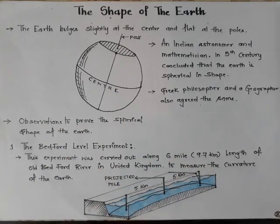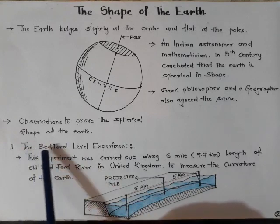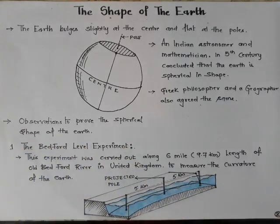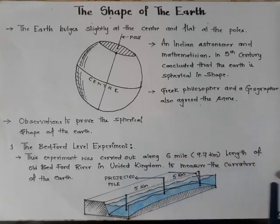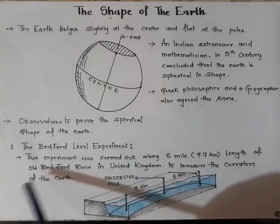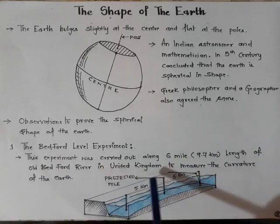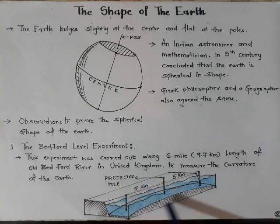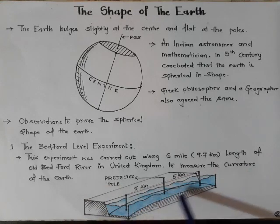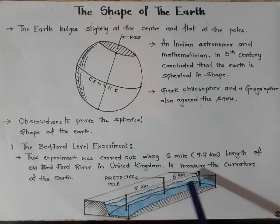The Bedford Level Experiment was carried out along a six-mile long Old Bedford River canal in United Kingdom to measure the curvature of the earth. The surface of the water looks flat. There are three poles installed at equal intervals of five kilometers, and on observing from one end, the central pole looked projected.